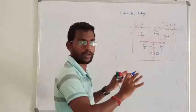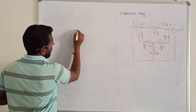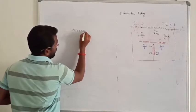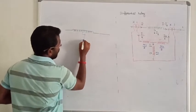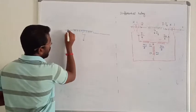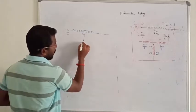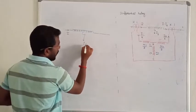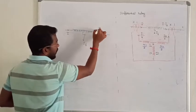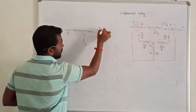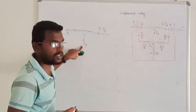So the differential relay — if you operate a transmission line, there is a fault. Primarily, the sending current is I, then the fault current is IF. If you receive the current, then it is I minus IF. So the receiving current is I minus IF.